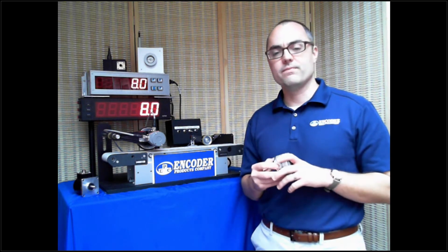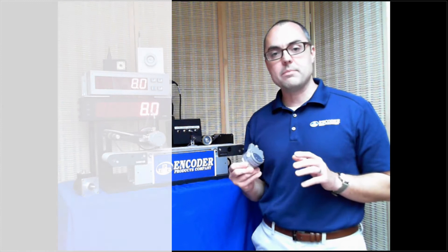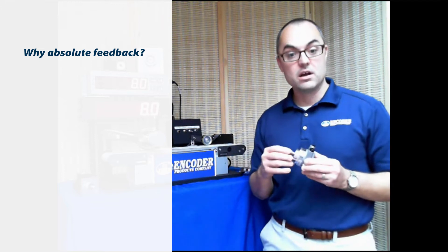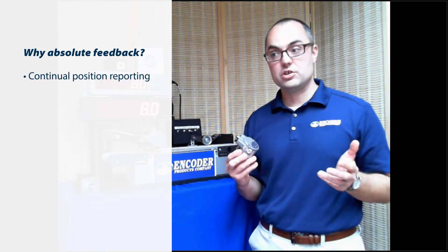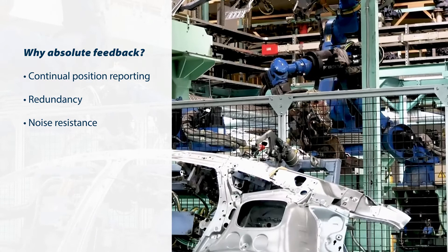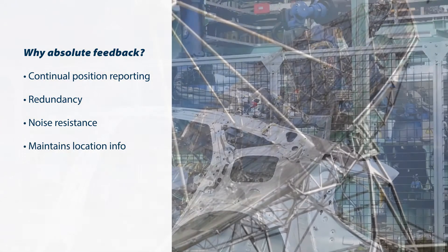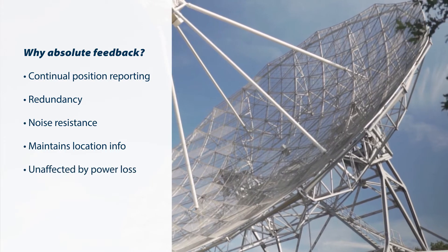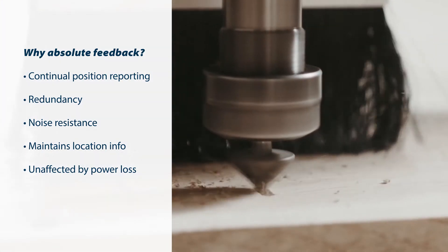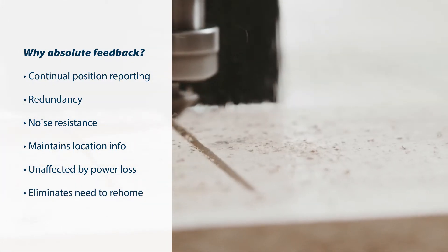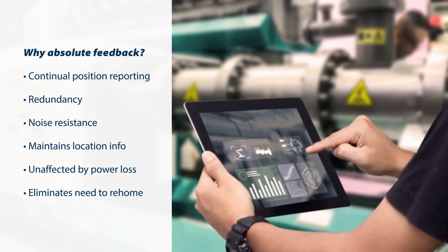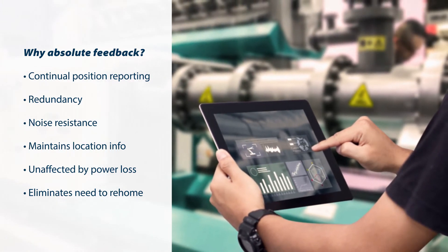So why would you need an absolute encoder? Well, there's some very important reasons why depending on your application, you may choose to go with absolute feedback versus incremental feedback. One of them is maybe you have a situation, an application where there's safety involved. You can't afford to lose position. You can't afford if there's noise in the environment, if there's a sudden loss of power. Some systems that doesn't matter. Think of a CNC machine and you have a power loss. What's the first thing you do? You hit the zero button, send everything home. We're going to hit a limit switch. We're going to set zero. That works great with an incremental encoder.